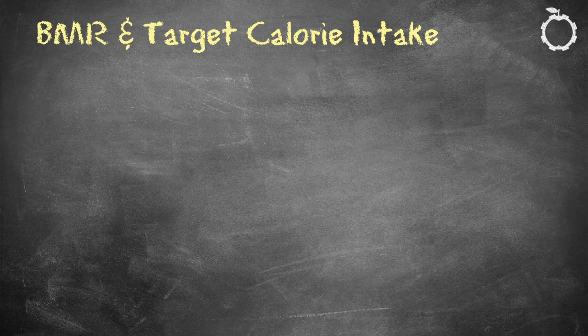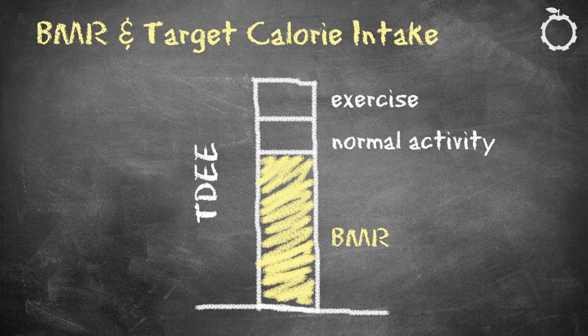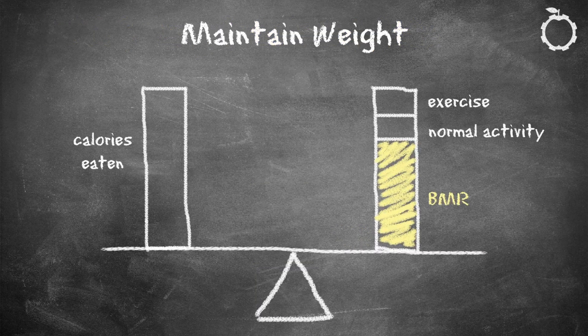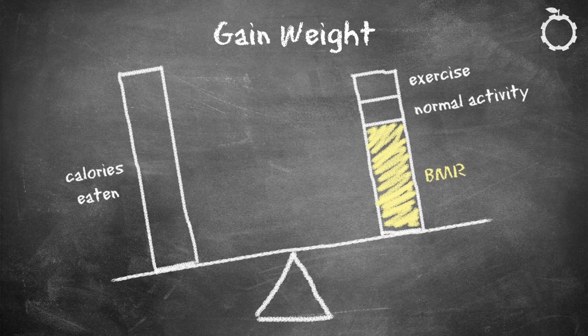You can download this spreadsheet and input your own numbers to compare BMR equations — this can be a game changer in determining your actual BMR and ideal calorie intake. It's important to understand that BMR is different from your target calorie intake. To find out how many calories you should eat, we first need to know your total daily energy expenditure, or TDEE — all the calories you burn including BMR, normal activities, and exercise. I covered the equations for calculating TDEE based on your BMR and activity level in another video. Understanding TDEE establishes your maintenance calorie intake, and from there you can reduce calories for weight loss or increase calories for muscle gain.